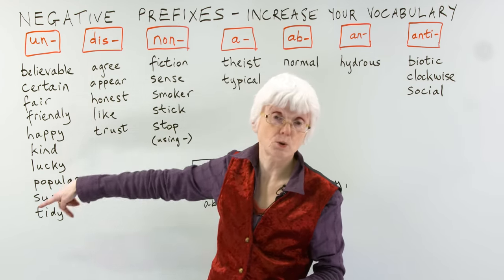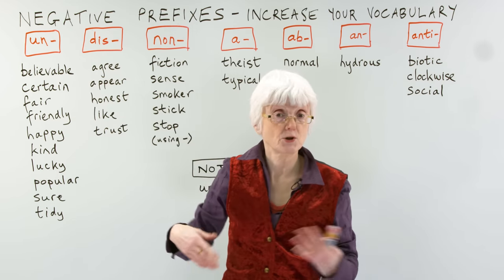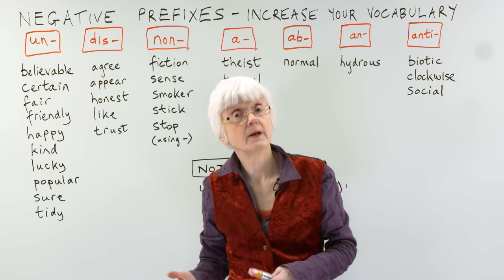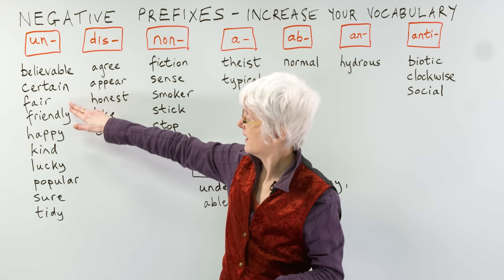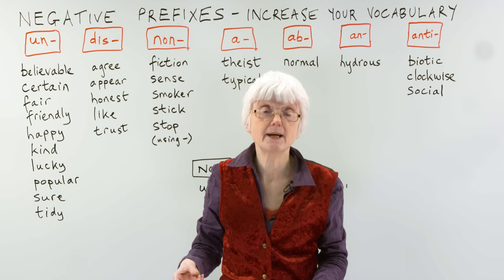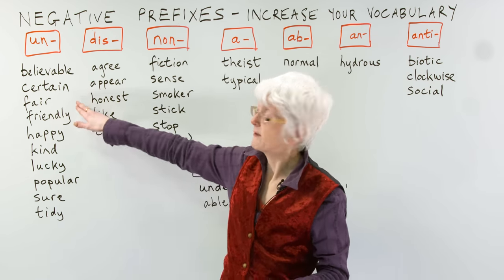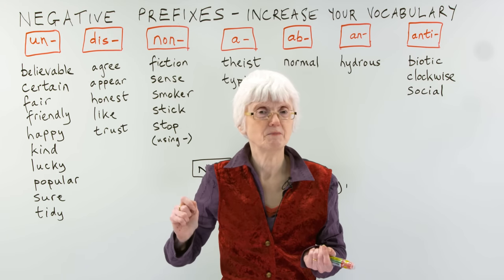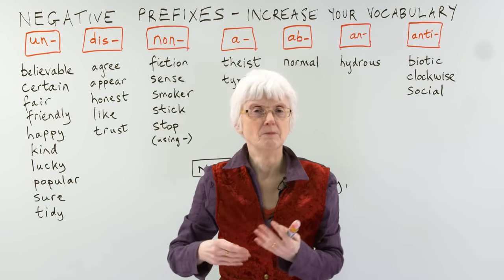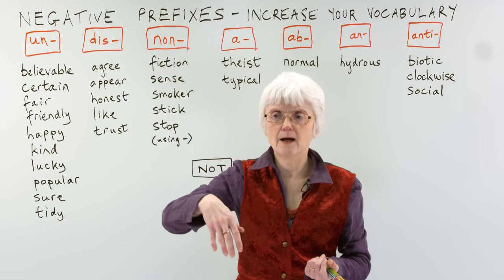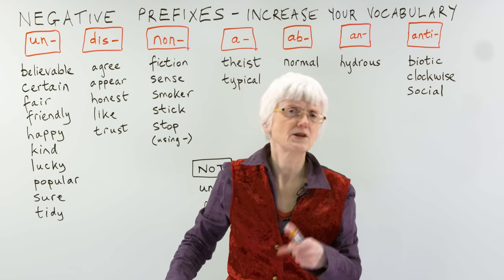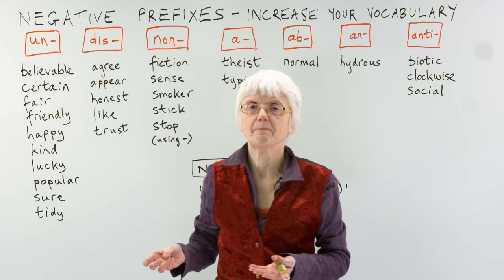There are a lot of words in English which you can add UN at the beginning. Another one: if you're certain about something, you're very sure — you know it's true. But if you're uncertain, then you're not sure. Fair — if things are fair, everything is good, everybody is being treated equally and treated well. But if something is unfair — if someone's handing out chocolates and gives five to one person, one to another, and none to another — then that seems unfair.